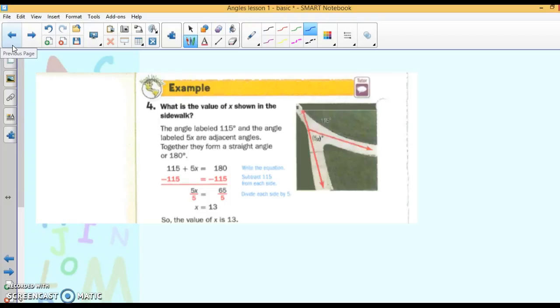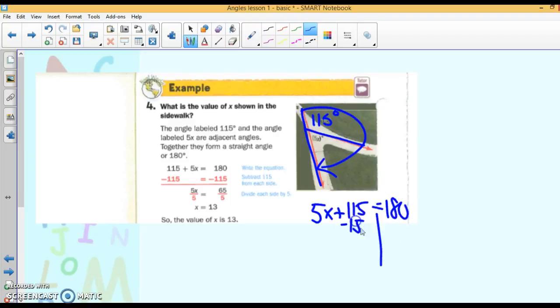Let's look at this. This is 115 and that's 5x. You want to find x. Well, these two form a linear pair. So, their relationship is that they add up to 180 or they are supplementary. So, our equation is going to be 5x plus 115 equals 180. Subtract 115. And you end up with 5x equals 65. Divide by 5. And you get x is 13.